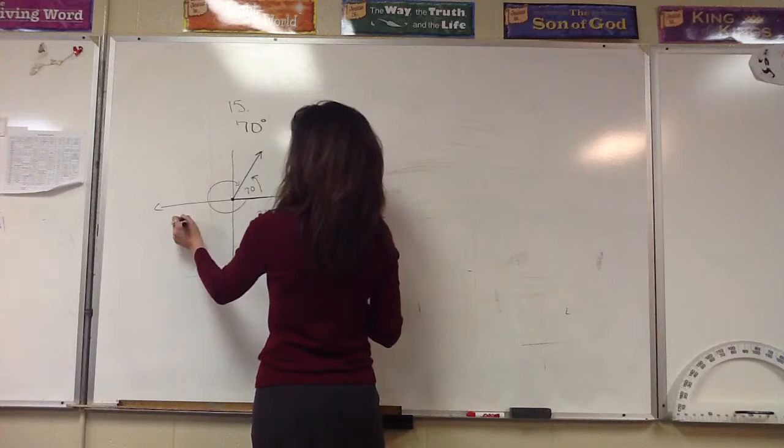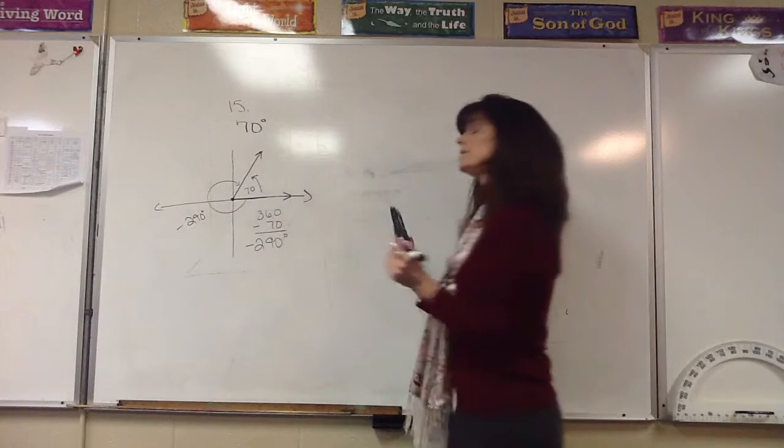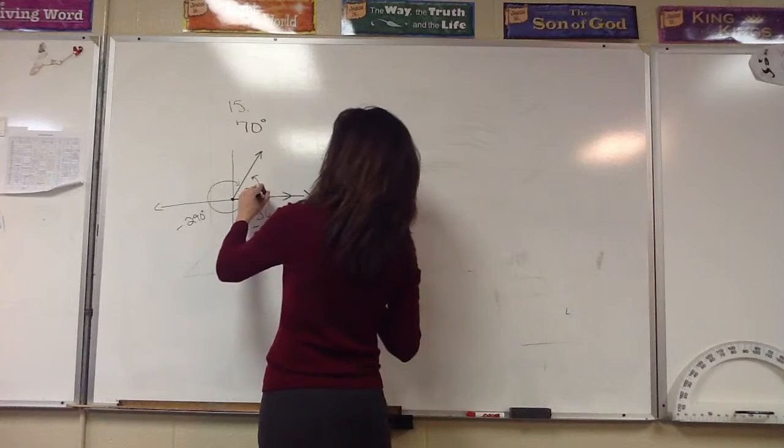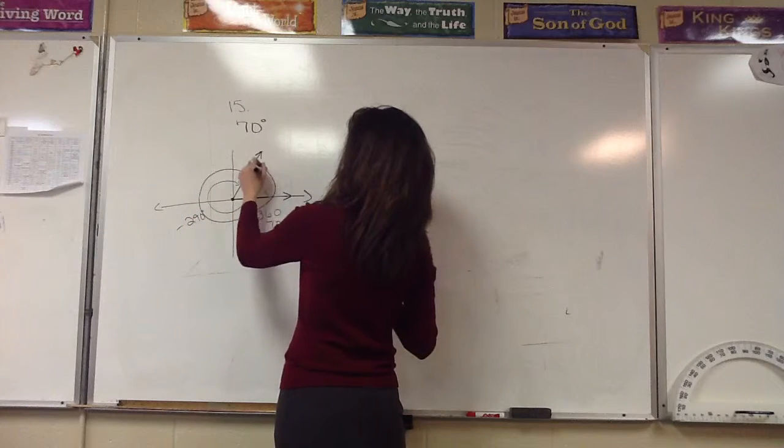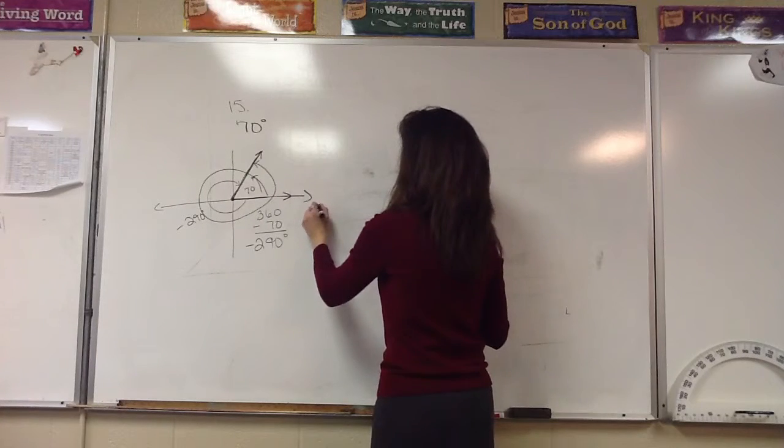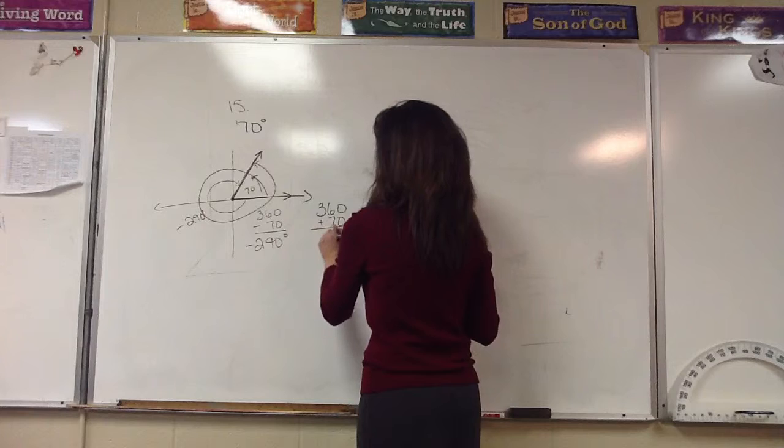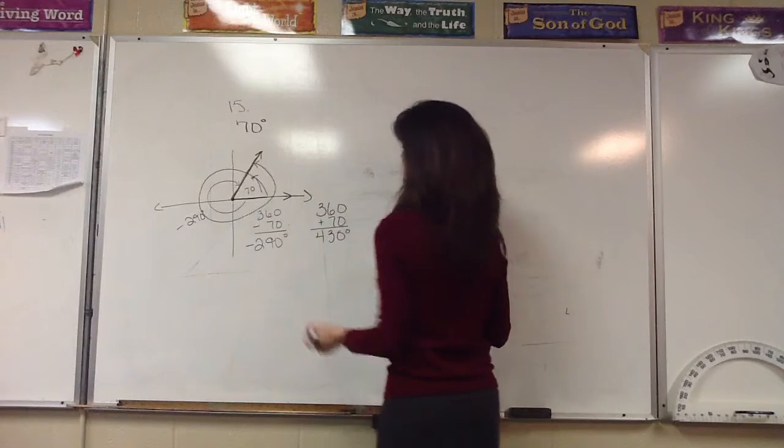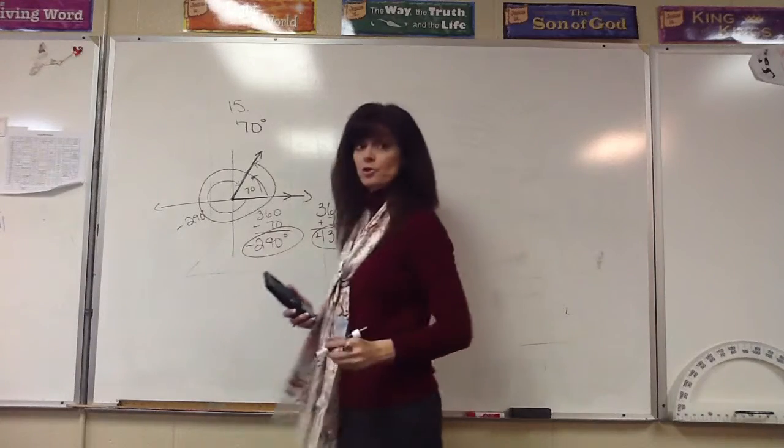So there's my negative angle, negative 290 degrees. Now I'll need to find a positive co-terminal angle. A positive co-terminal angle will go one complete rotation plus another 70. Remember, they all share this terminal side. So with this one, we're going to say 360 plus 70, and we should get 430 degrees. That would be two co-terminal angles.